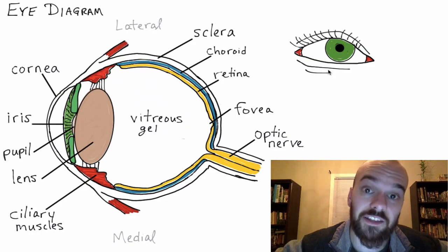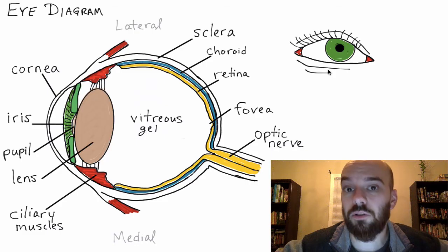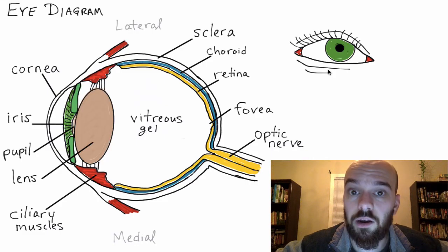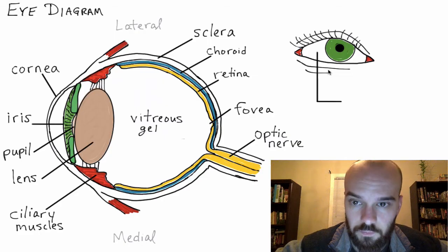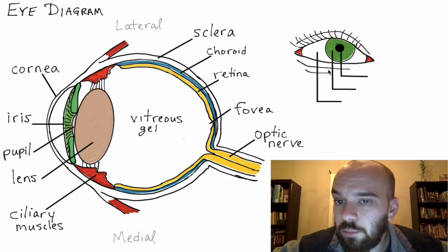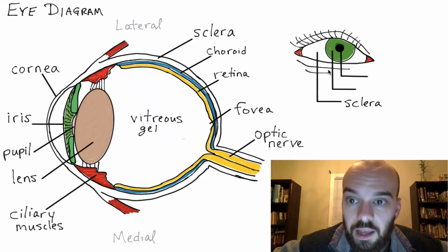My students will know that signal is sent to the occipital lobe of the cerebrum, where images are processed. We can also label on the front view of the eye: we've got the sclera and the iris.